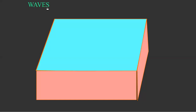Now let us learn about waves. This is a water tank with a calm water surface. When this surface is disturbed by dropping a pebble, particles of the medium vibrate. These vibrations travel in all directions and form a ring-like pattern.